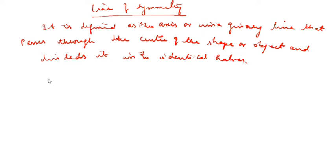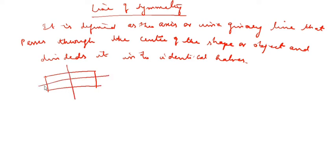We will take a rectangle. This is the imaginary line cut into half. You see, this is the first portion, second portion, third portion, fourth portion — all should be equal. This is 5 cm, this is 2, so this is also 5, 2. This is called line of symmetry.